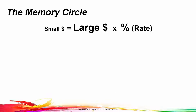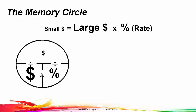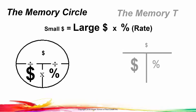In these types of problems, we have two dollar amounts and a percentage or a rate. In the memory circle, the small dollars go on top, the big dollars go on the bottom left, and the percentage on the right. This means the small dollars on top are equal to the big dollars times the percentage. The memory T is the same as the memory circle, but without the circle.